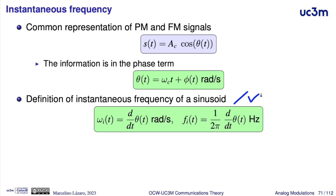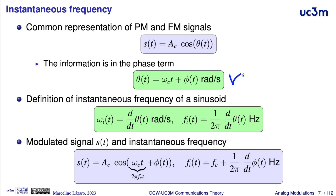It is interesting to remember the definition of instantaneous frequency of a given sinusoid. The instantaneous frequency in radians per second is just equal to the derivative of the argument of this sinusoid — in this case, the derivative of zeta of t. In hertz, we only need to divide by two times pi. Taking into account this expression for the argument, the instantaneous frequency in hertz can be written as the carrier frequency in hertz plus one divided by two times pi, times the derivative of the information term phi of t.